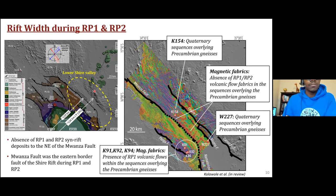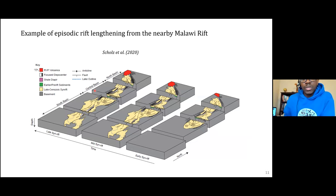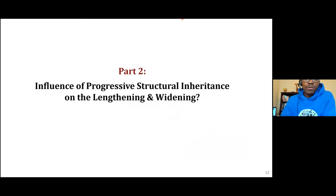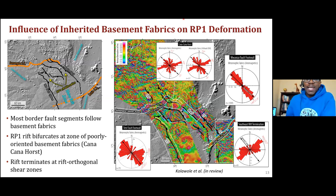A recently published paper by Shoos et al. 2020 shows the same pattern of rift lengthening in the Malawi Rift over time. Moving to Part Two: the influence of progressive structural inheritance on the lengthening and widening of this rift basin.